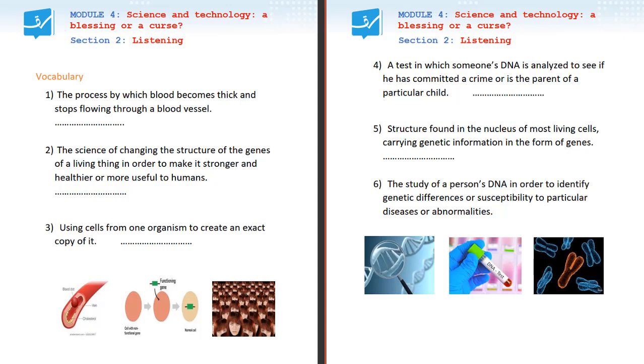We speak about a process by which blood becomes thick and stops flowing through a blood vessel. Here, when blood becomes thick, you might see the picture. Blood is blocking the vein. This is a vein. What do you call this process? It is called blood clotting.